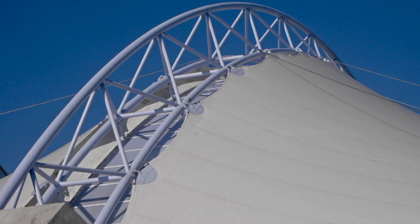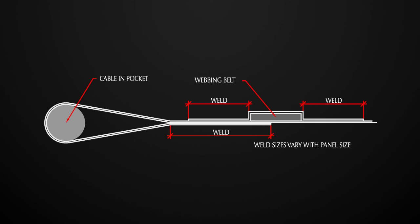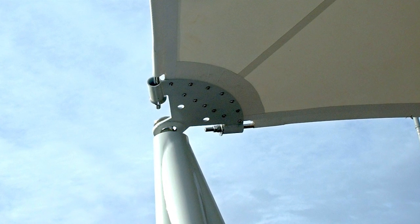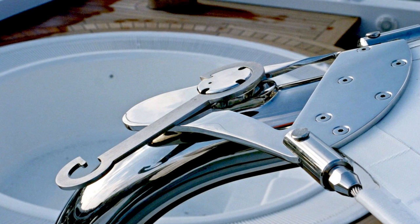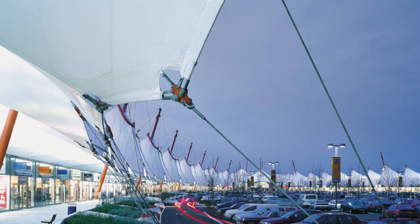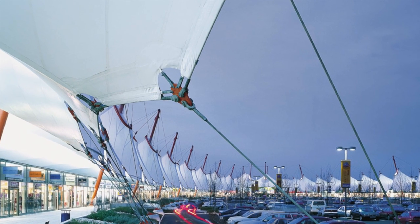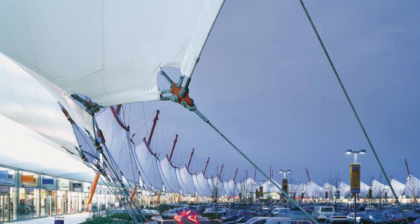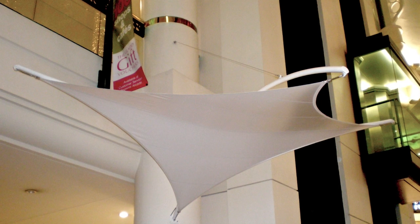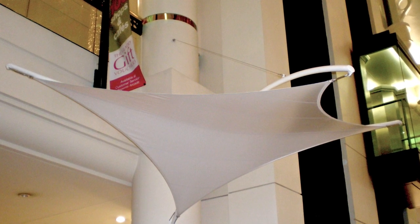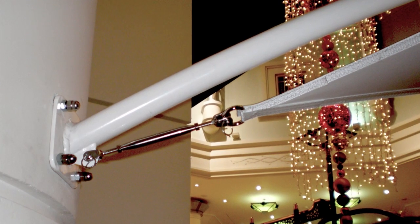A curved or scalloped edge generally consists of a cable enclosed in a pocket in the edge of the fabric membrane. The cables are held and tensioned at the corners by the membrane plates. In larger canopies, webbing belts are added parallel to the pocketed edge for reinforcement, but smaller structures may need no cable at all.